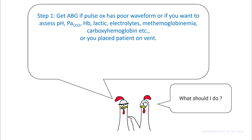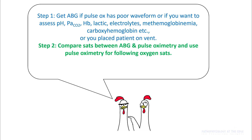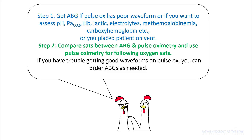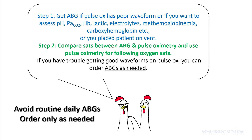So what should you do? Get an ABG if pulse ox has a poor waveform, or if you want to assess other parameters that come with the ABG such as pH, PaCO2, hemoglobin levels, lactate, etc., or if you just placed your patient on the ventilator. Once you get the ABG, compare SaO2 from the ABG and pulse oximetry, look at their concordance, and then use pulse oximetry for following oxygen saturations. If you have trouble getting a good waveform on pulse ox, you can certainly order ABGs as needed. Avoid routine daily ABGs and only order them as needed based on the clinical question.